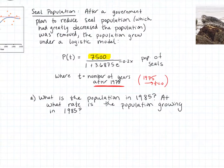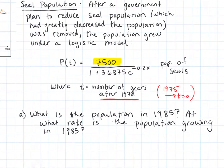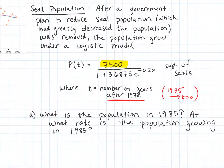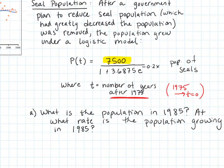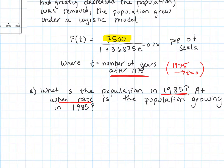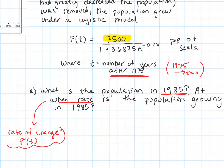Let's work with that seal population model to answer a few questions. It asks: what is the population in 1985? And at what rate is the population growing? When we talk about a rate, that is a derivative, so we'll be looking at P prime of T. Let's calculate P prime of T so we have both the population model and the rate of change model.